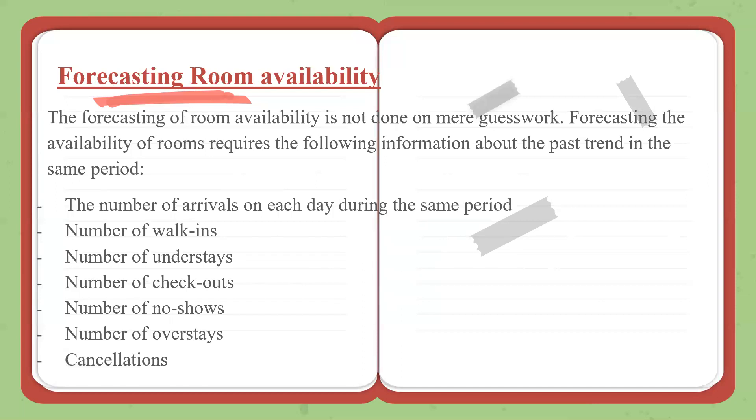To get the approximate rooms per day that you're going to do, you need to know arrivals on each day during the same period last year. It's good to have that data for the last two, three years also. All this past data we are looking at here. Number of walk-ins, typically historically. Even now, the current trends—how many walk-ins, percentage of walk-ins, or number of walk-ins last month on an average, also last year, and last year this time.